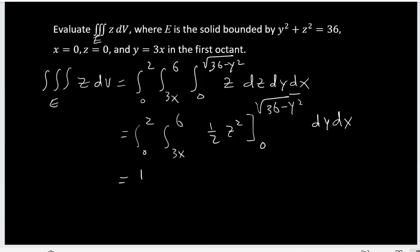Plug the limit, keep your one half all the way to the left side. 0 to 2, 3x to 6. Plug the limit, you get 36 minus y squared. The limit is already there, integration with respect to y first, then x.